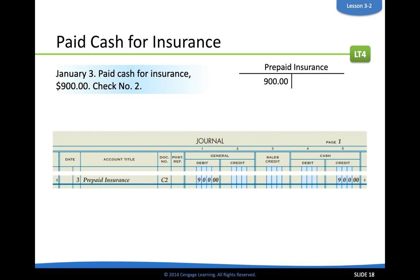There are a few different examples to go through. First: paying cash for insurance, a transaction type from chapters one and two. As a review from chapter two, looking at our T-accounts — the accounts impacted are prepaid insurance and cash, both assets. One needs to go up and one needs to go down to keep our accounting equation in balance. So we debit prepaid insurance to make that go up by $900, and credit cash to make that go down by $900.